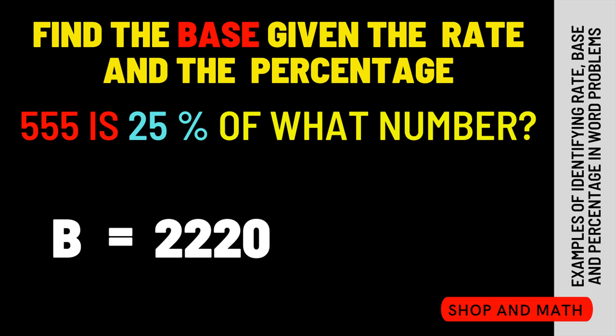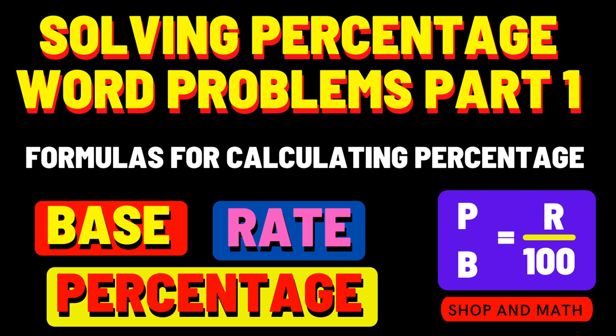Therefore, 550 is 25% of 2,220. Now that we can identify the rate, the base, and the percentage, and we know our formulas, we can move on to much more difficult word problems dealing with percentages. But that's another video.